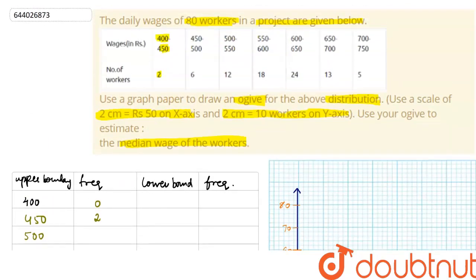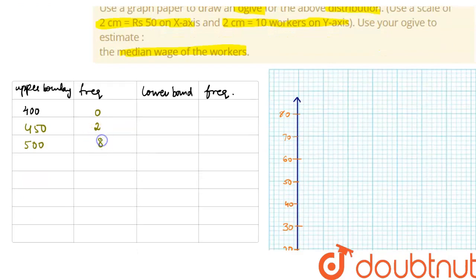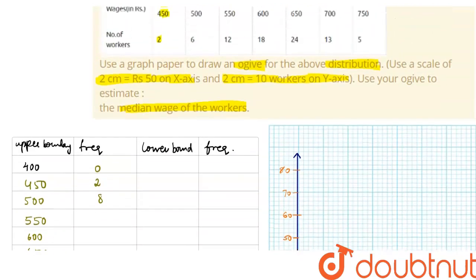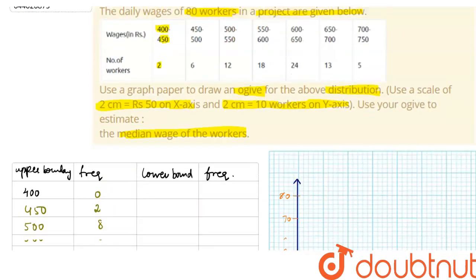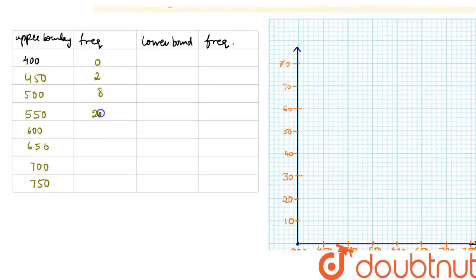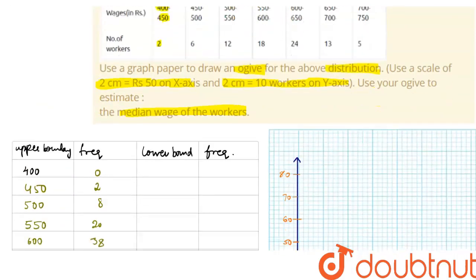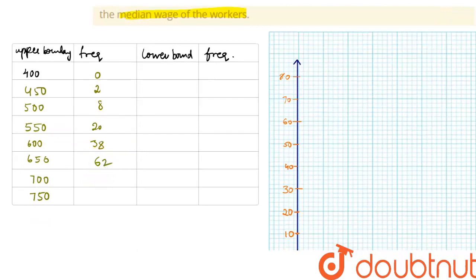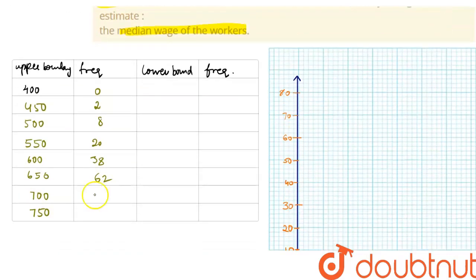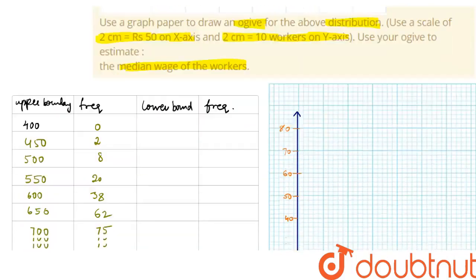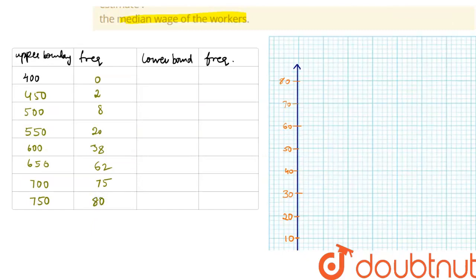The cumulative frequency for less than 500 is 0 + 2 + 6 = 8. For 550 we get 20, for 600 we get 38, for 650 we get 62, for 700 we get 75, and for 750 we get 80. This completes our upper boundary cumulative frequency table.